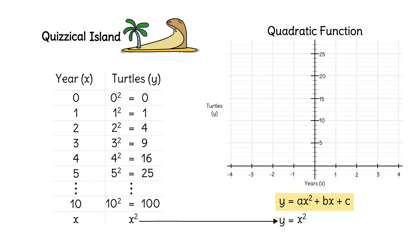From the data in our table, we can make a graph. The graph shows us that the turtles increase at a faster and faster rate as time passes.